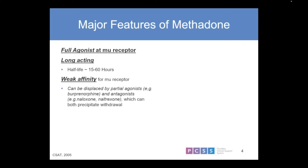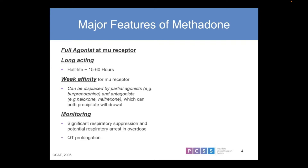Methadone can be displaced by partial agonists or antagonists, which would precipitate withdrawal. It does require constant monitoring due to its effect on respiratory depression and also QT interval prolongation. We want to be careful about prescribing it to someone with a history of QT prolongation, heart disease, or arrhythmia — you'd want to check that out, even family history.